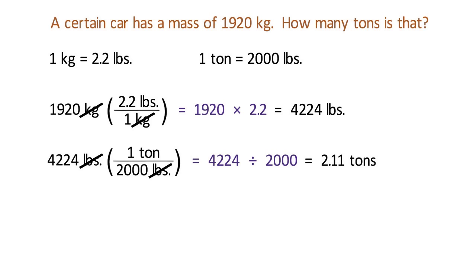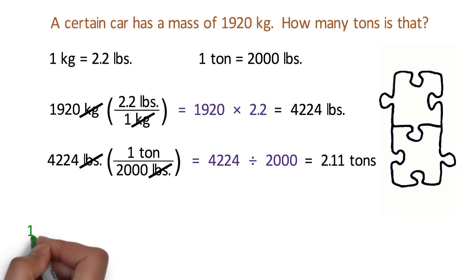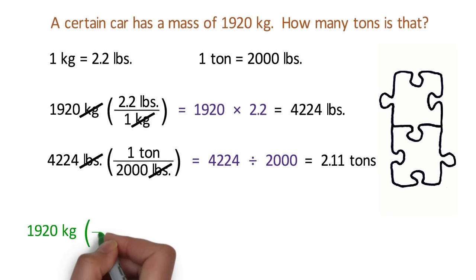Rather than solving this in two separate steps, we can combine those steps into one step with two conversion factors. Check this out. Once again, start the problem by writing down the quantity that you want to convert. Multiply this by a conversion factor fraction, putting what you want to cancel out on the bottom and what you want to convert it to on the top. Notice that so far this is exactly the same as the first step we just did.